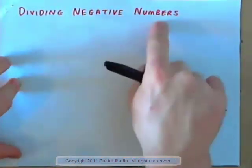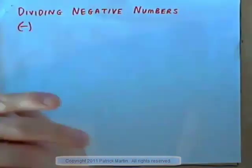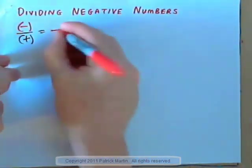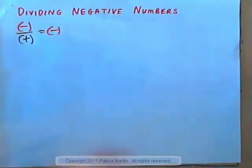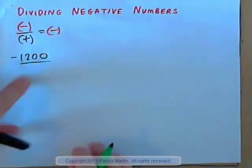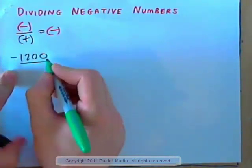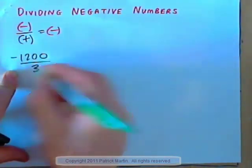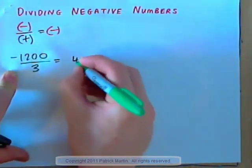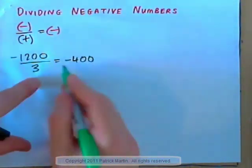Let's have a look at dividing negative numbers now. If you have a negative divided by a positive, that's actually equal to a negative. Let's try and understand this with a real life example. Let's say your monthly rent bill for the house is $1200. If you divide that among three tenants, then each tenant pays $400. So each tenant has a bill of $400. So negative over positive gives negative.